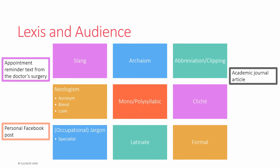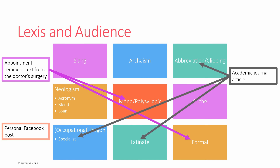For the audience: the appointment reminder text's audience is the patient or client, so this needs to be formal language, but also monosyllabic because it's trying to set a friendly tone. For the academic journal article, there is a specialist audience, so we expect specialist knowledge about abbreviations, clippings, and other specialist terms, archaic terms, and Latinate terms. The writer uses them because they expect the audience to know them, and the audience expects these terms to show the credibility of the author. For the personal Facebook post, the audience is generally friends or family, so we expect vernacular terms, informal language, slang, monosyllabic words, perhaps some clichés and inside jokes.